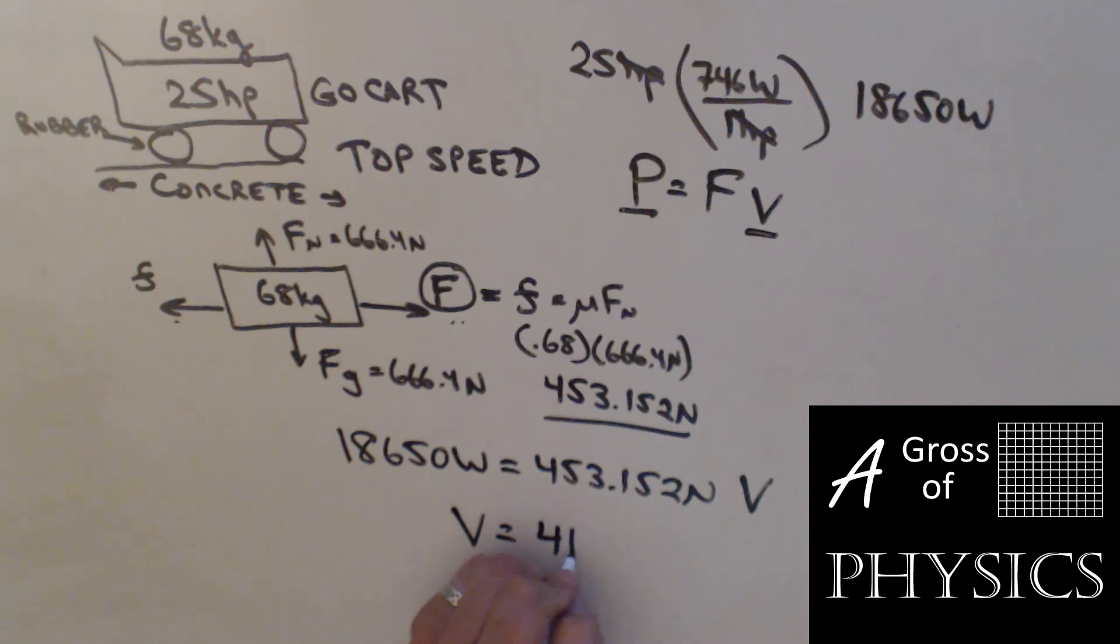The top speed for this go-kart is 41.2 meters per second, a little over 90 miles an hour. That's a pretty good go-kart.